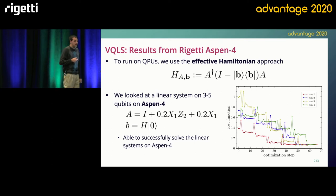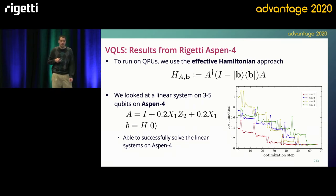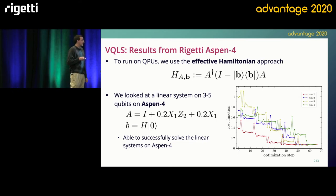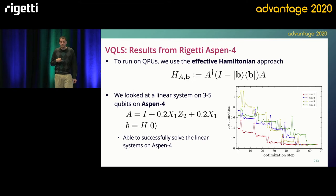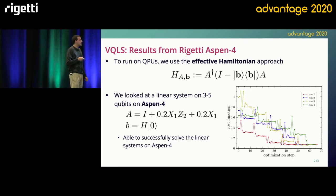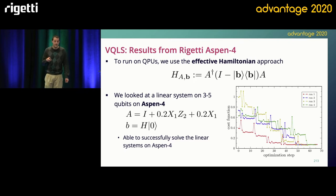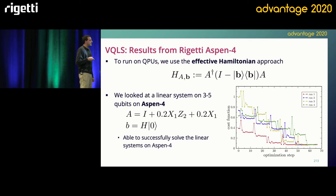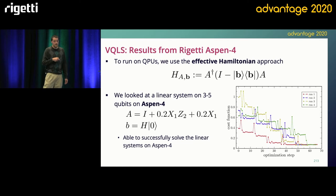To run this on hardware, in the paper we ran this and got some results on Rigetti Aspen-4 lattices. We use something called the effective Hamiltonian approach, which is this Hamiltonian that we form from the input matrix and vector B. If you stare at it, you can convince yourself that if you right-multiply this by the solution of the linear system, then the vector x will be an eigenvector with eigenvalue zero, and you can show that's the unique vector that satisfies that. So there's a unique ground state of the solution, and by minimizing the expectation, we're able to find it. This data from the paper shows that on five different runs starting at different angles, we're able to optimize this and solve this particular linear system.